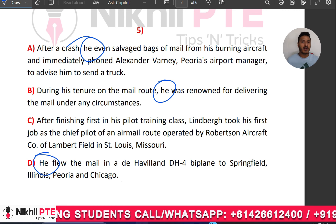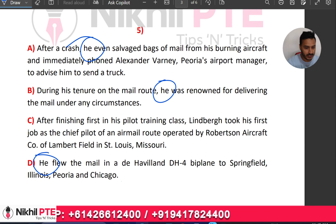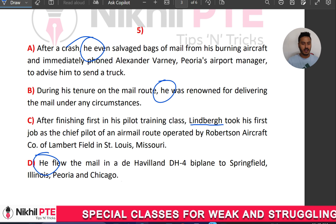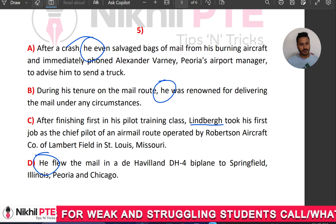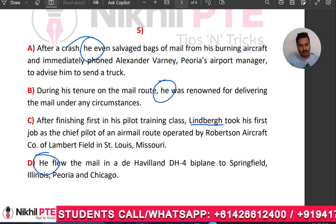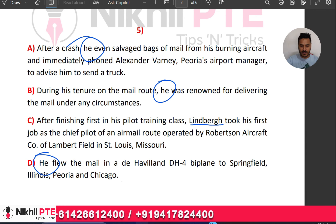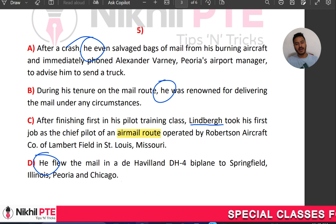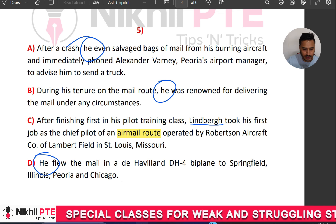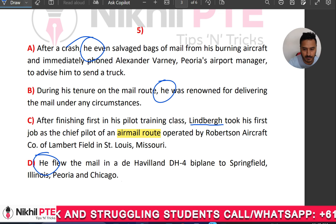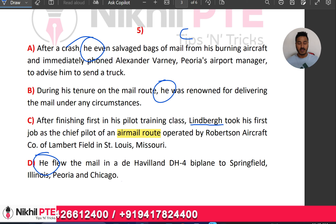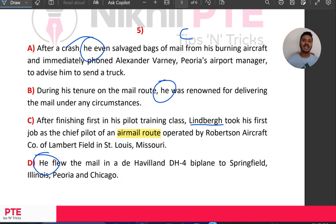Options A, B, and D contain the pronoun, so they cannot be first. In the C option you can see a noun — Lindbergh. The sentence reads: 'After finishing first in his pilot training class, Lindbergh took his first job as the chief pilot of an airmail route operated by the Robertson Aircraft Company of Lambert Field in St. Louis, Missouri.' So C option will come first. Now, what comes after C? We use the keyword matching trick.